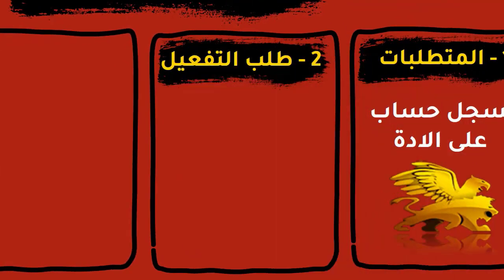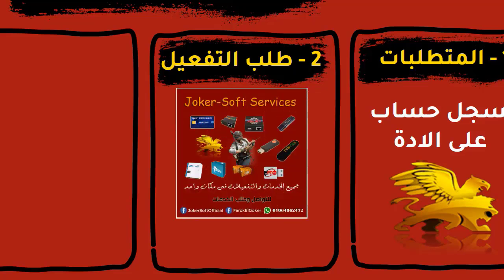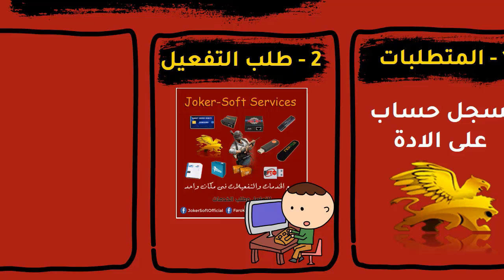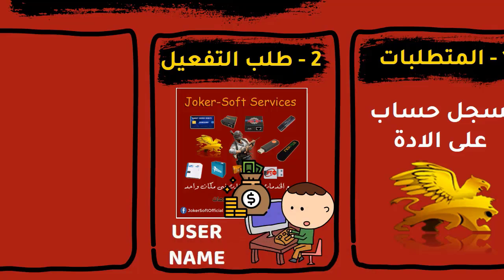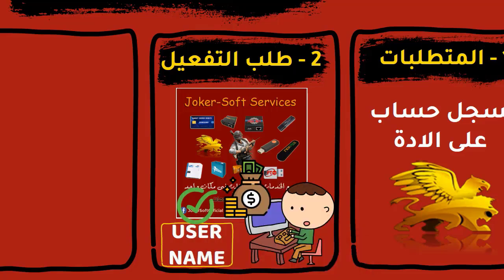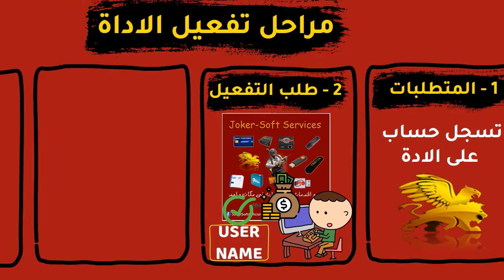The second stage is the application for activation stage. In this stage you will contact us on the Jokersoft services, or you can request activation from any trusted provider dealing in colors and activations. Pay for the activation you need, whether the Samsung version or the Pro version. The person who will activate the tool for you will ask for your username from the account you just registered on the site. Send them your username and make sure the name is correct, so the activation doesn't fail or get applied to someone else's account.